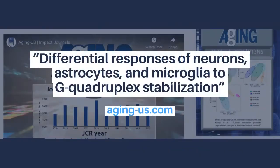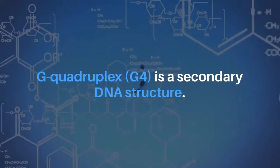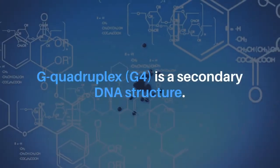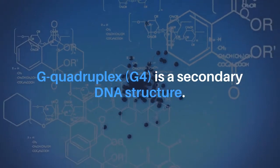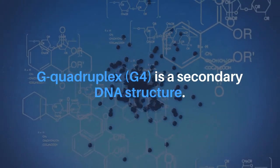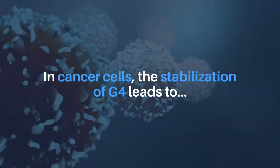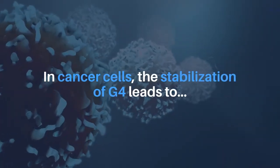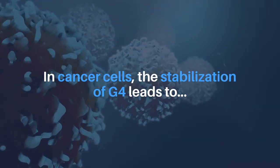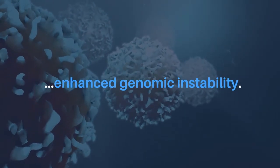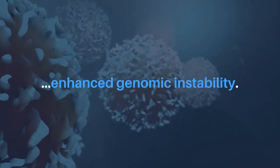Differential Responses of Neurons, Astrocytes, and Microglia to G-Quadruplex Stabilization. G-Quadruplex, or G4, is a secondary DNA structure. In cancer cells, the stabilization of G4 leads to enhanced genomic instability.